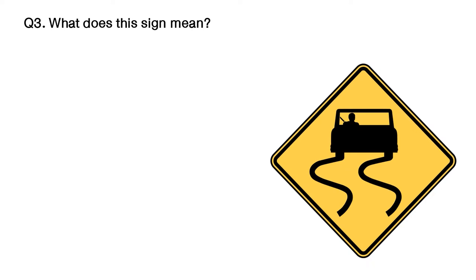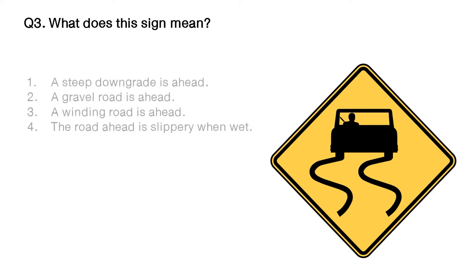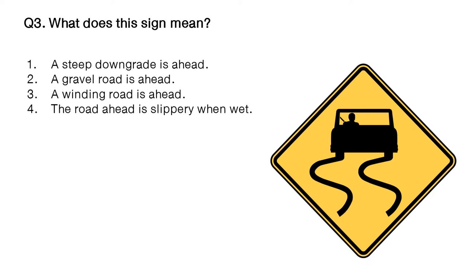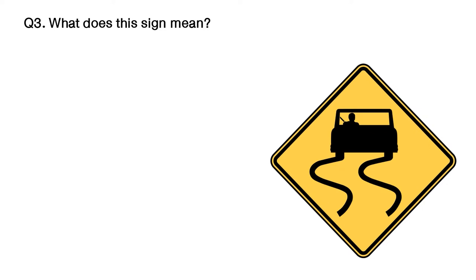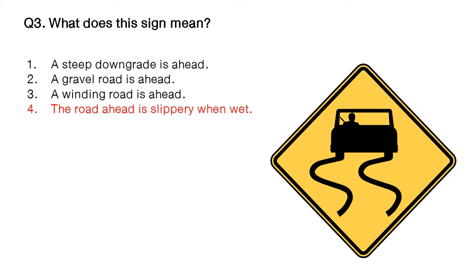Question: what does this sign mean? Option number 1: a steep downgrade is ahead. Option number 2: a gravel road is ahead. Option number 3: a winding road is ahead. Option number 4: the road ahead is slippery when wet. The answer is option number 4: the road ahead is slippery when wet.